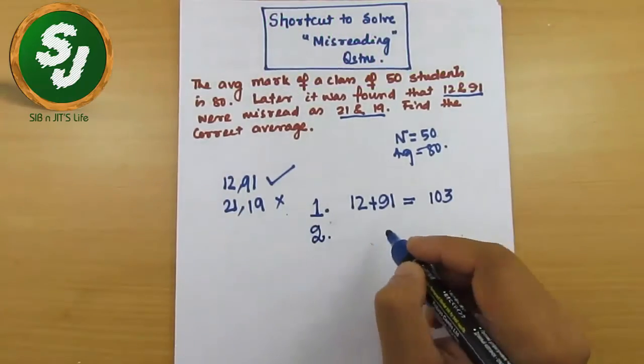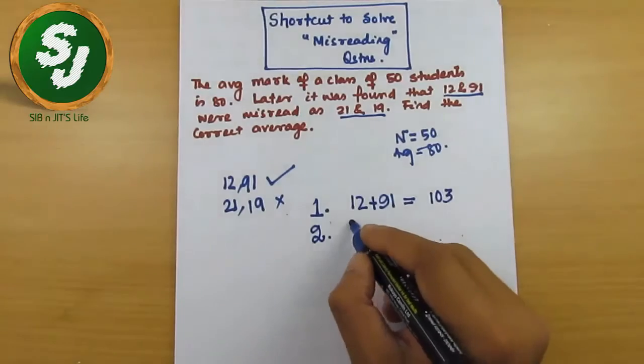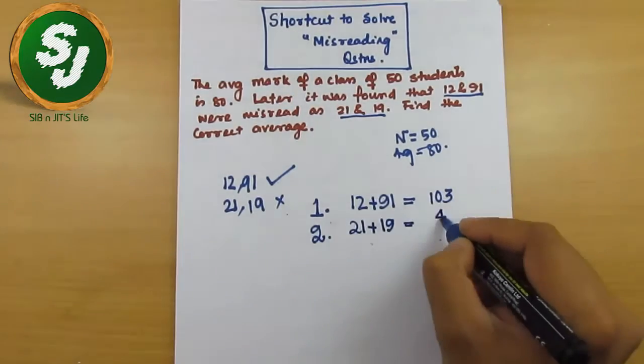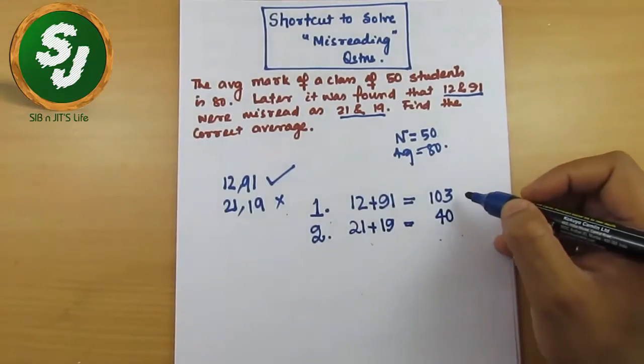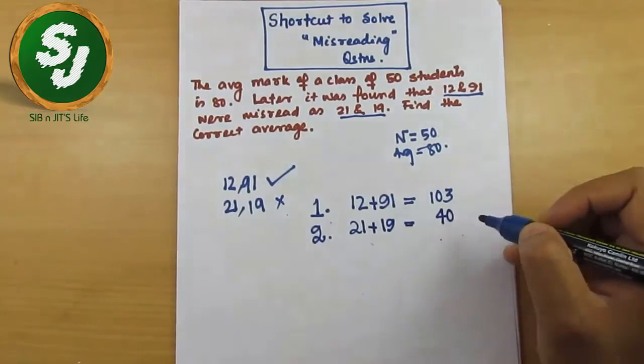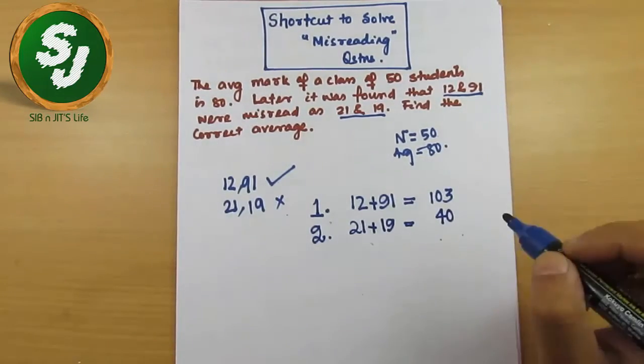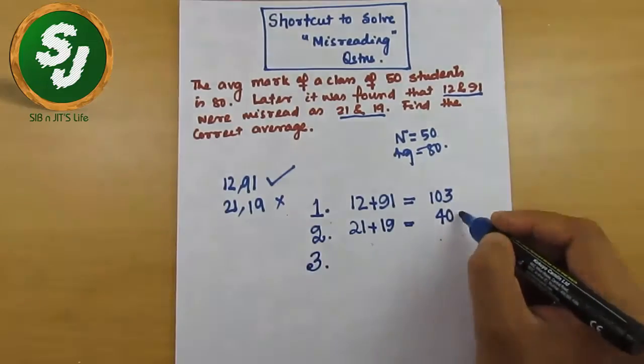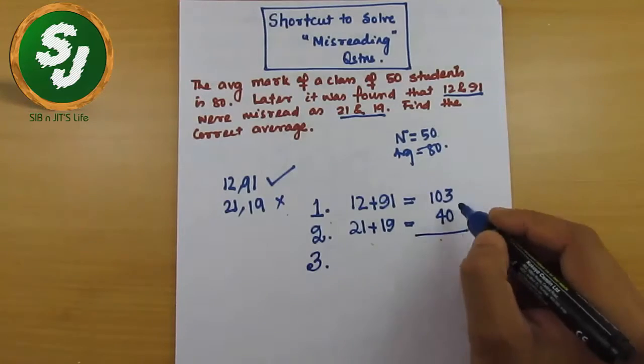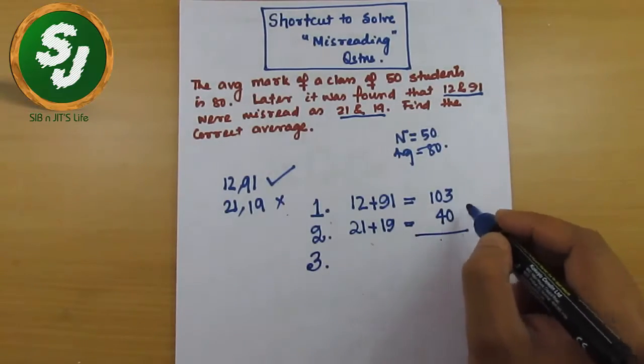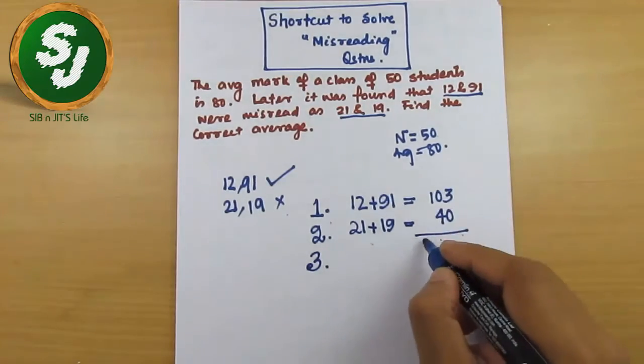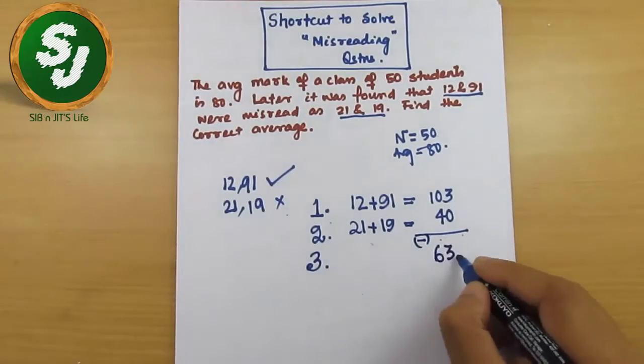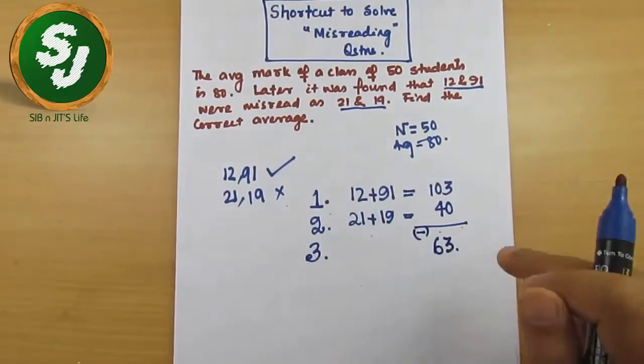In step two, you add up the wrong marks. The wrong marks means 21 plus 19, this becomes 40. In step one you added up the correct marks, in step two you added up the wrong marks. And in step number three, subtract these two: 103 minus 40. So step one minus step two you will have to do in this step. 103 minus 40, so this is your answer, 63.